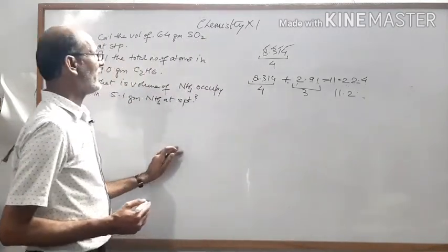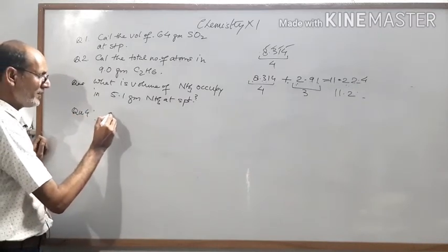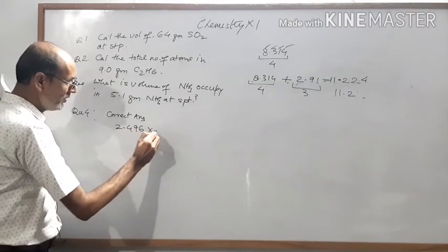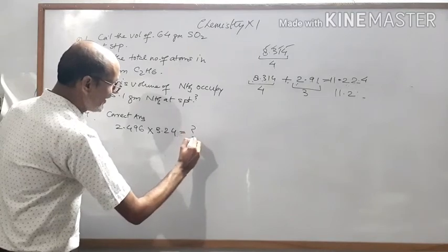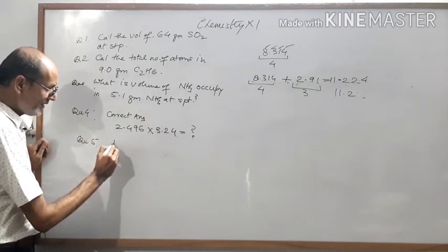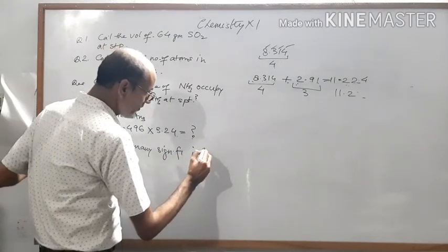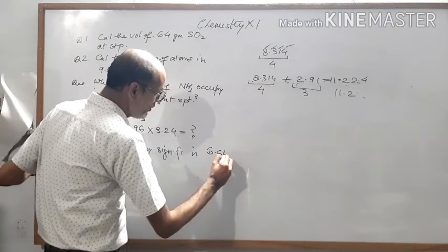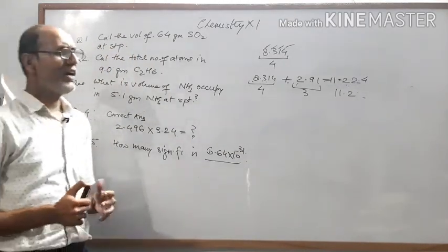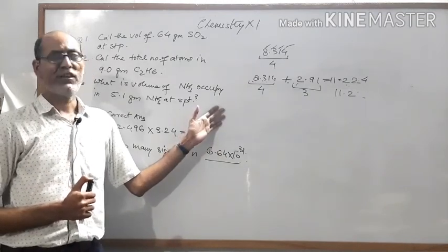I am giving you more questions. Question 4: find the significant figures in the correct answer for 2.496 into 3.24 — write the correct answer according to significant figures. Question 5: how many significant figures are in the constant 6.64 into 10 to the power minus 31? Solve these questions and submit them. If you have any query, write and send me, and I will provide the solution tomorrow. Good night!